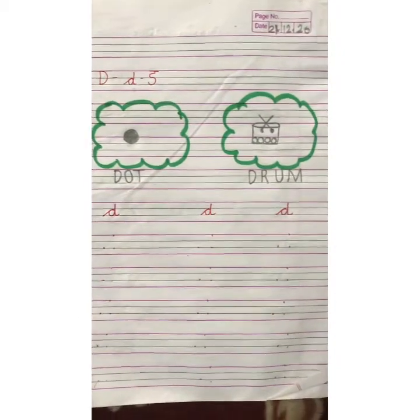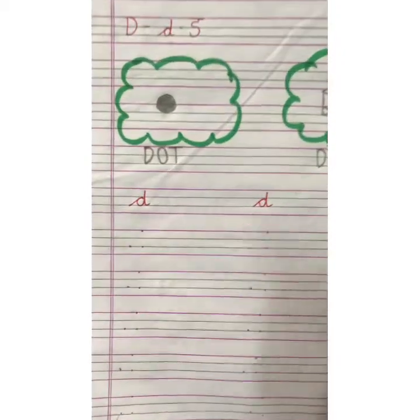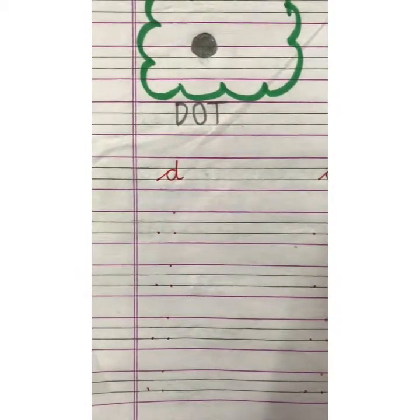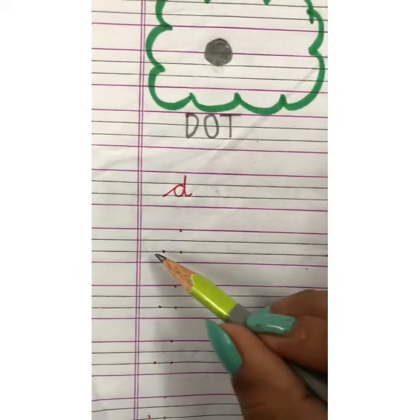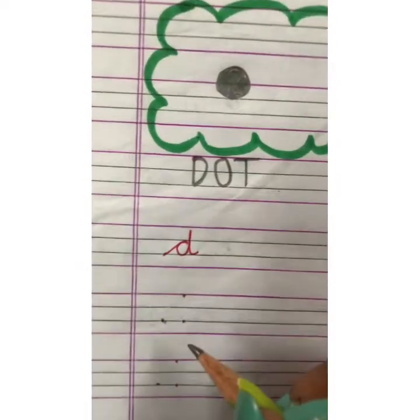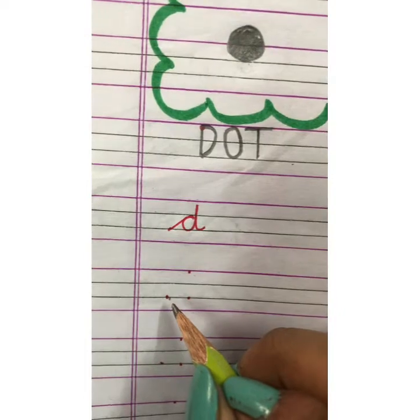Now, ma'am will tell you how to make cursive letter D. Now, look, kids. Ma'am has given three dots. One, two, and three. So, first, you all have to start from this dot.